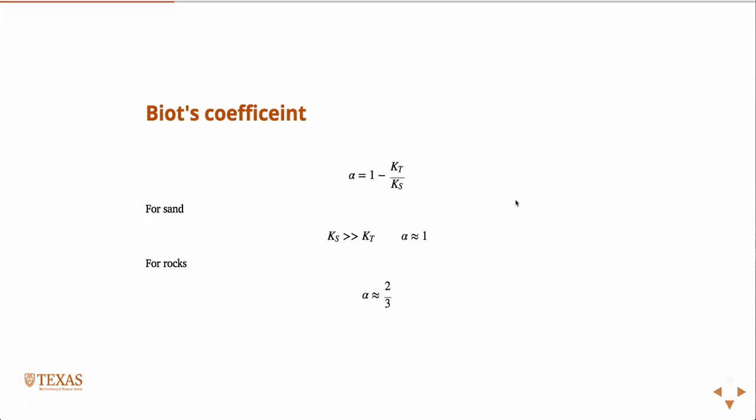And this was the final result, that coefficient multiplying the pore pressure is 1 minus kT, so that's the total or bulk modulus of the skeleton, so the solid plus the pores, over the bulk modulus of the solid.